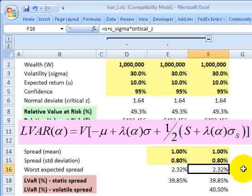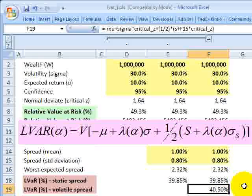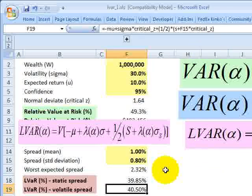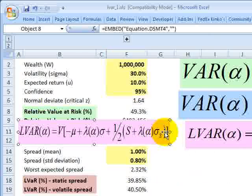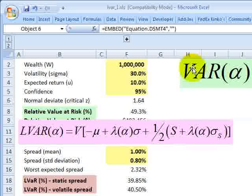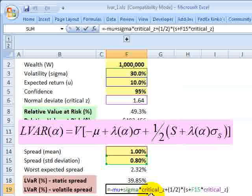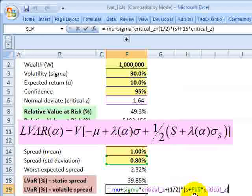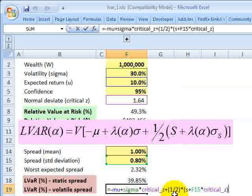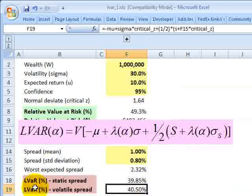And so that here, what I call the volatile spread, if I just move this over and pull this out, I've implemented this formula right here, and we've got the absolute VAR right here, negative expected return plus volatility times normal deviate. And then we add one-half this quantity right here, which is the spread, the mean spread, plus the standard deviation of the spread scaled by the critical Z. So what we've got right here is the worst expected spread. So we're adding one-half the worst expected spread. And that gets us the liquidity adjusted value at risk and incorporates the volatility of the spread.